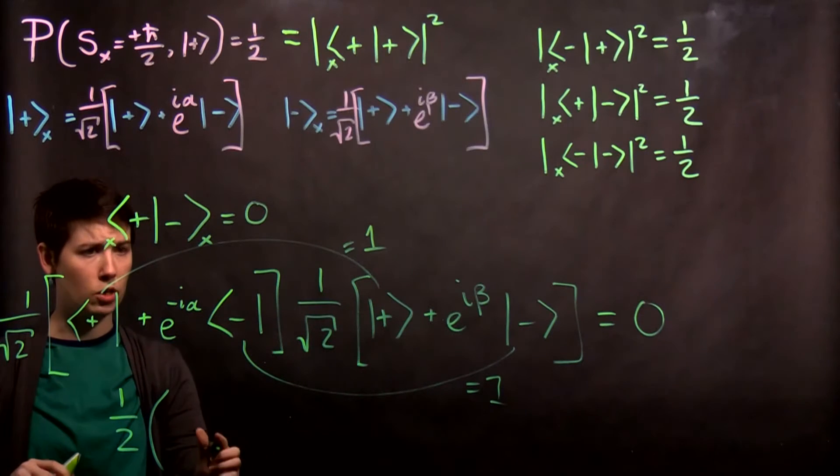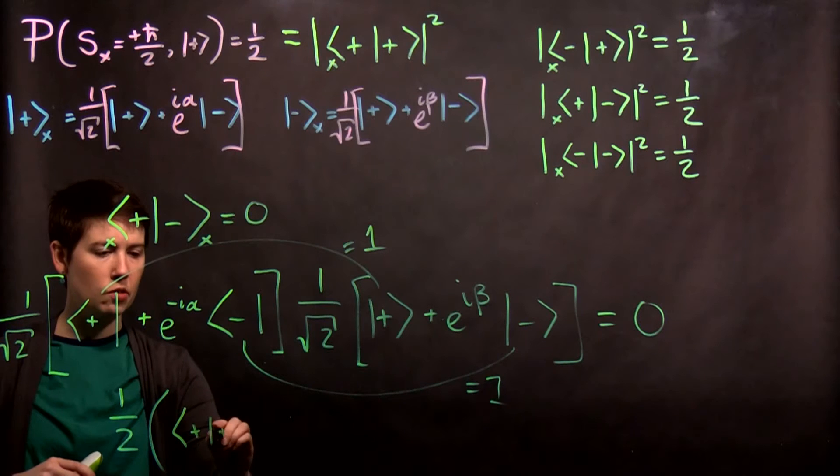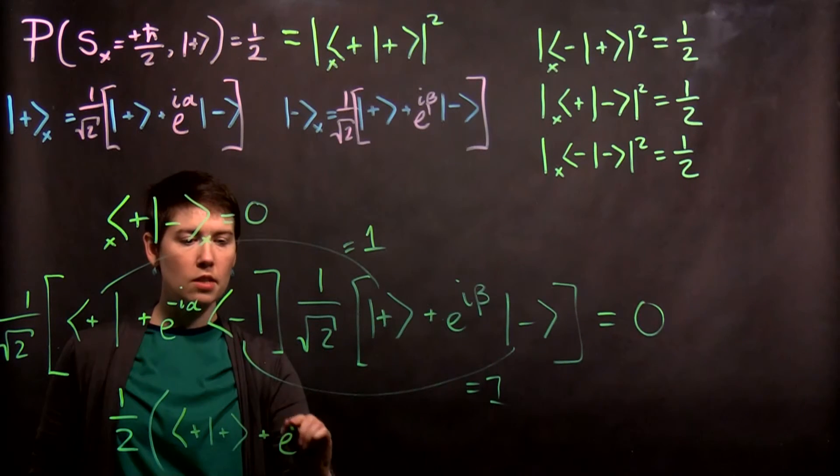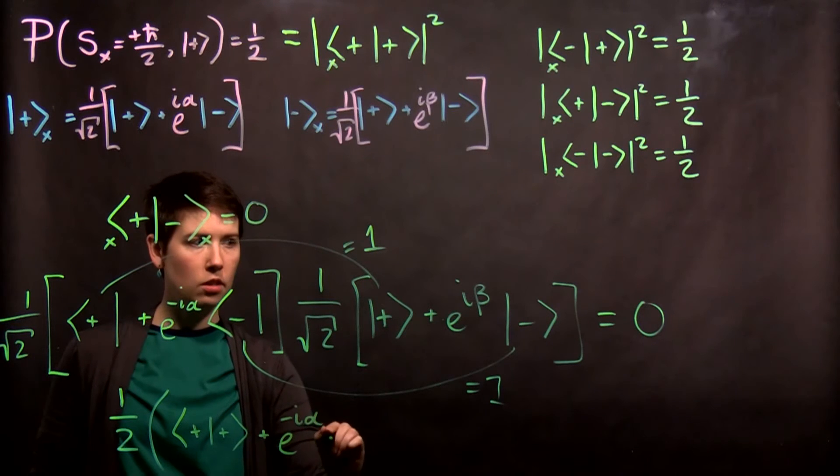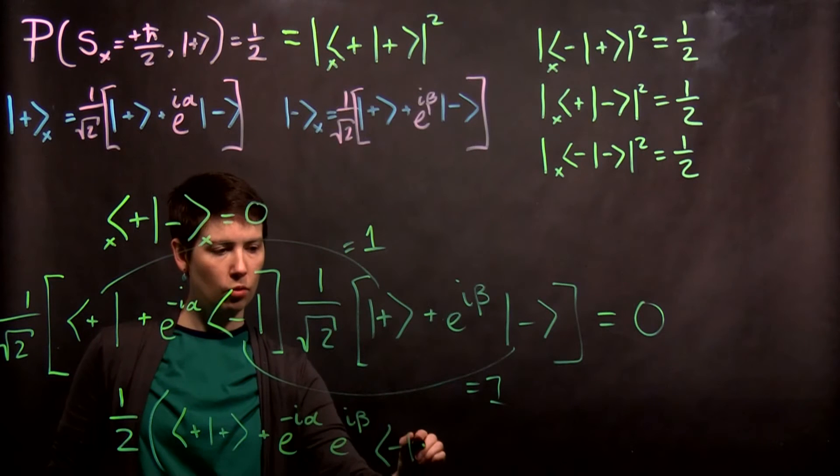So I only have these two terms to worry about. What I see is I have my plus with plus, and then I'm going to say plus, this minus with minus. e to the negative i alpha, e to the i beta, and then minus with minus.